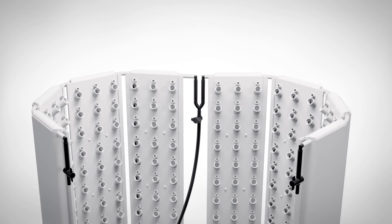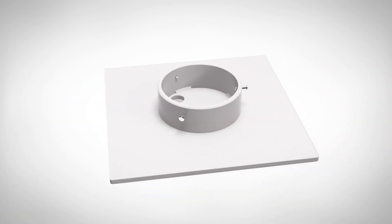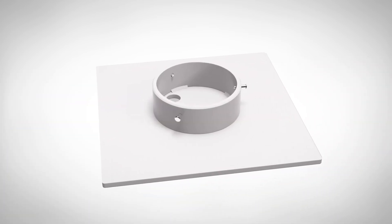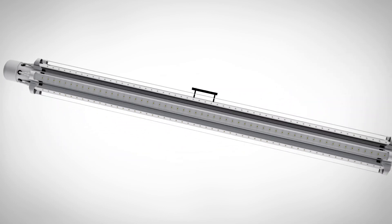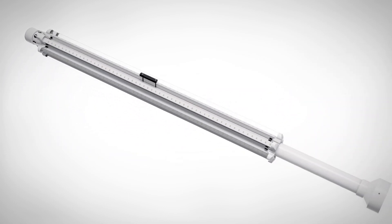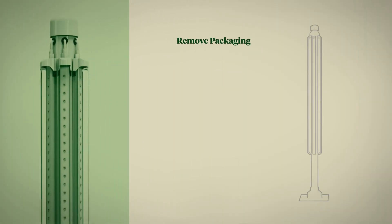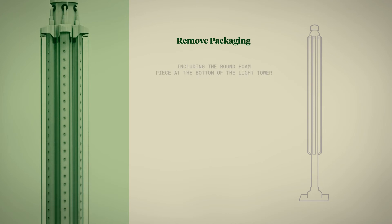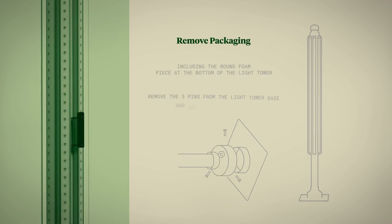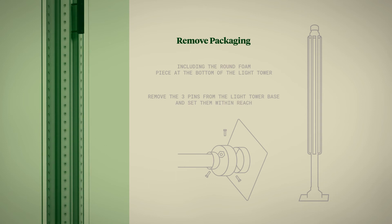Now it's time to add the light tower. Locate the light tower base and three pins and set them aside. Carefully lay the light tower down with the handle facing upwards. Remove the packaging including the round foam piece at the bottom of the light tower. Then remove the three pins from the light tower base and set them within reach.